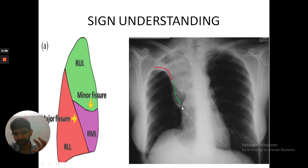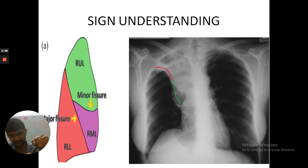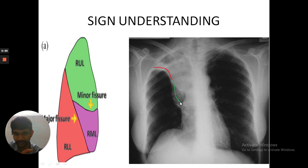Why does it happen? In cases of endobronchial obstruction, such as bronchogenic carcinoma, when there is obstruction of the right upper lobe bronchus, it leads to right upper lobe collapse, causing the minor fissure to go up. The minor fissure has gone up and there is an enlargement of the hilum due to the mass, causing hilar enlargement associated with the right upper lobe collapse.